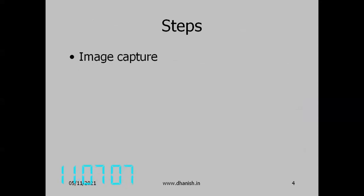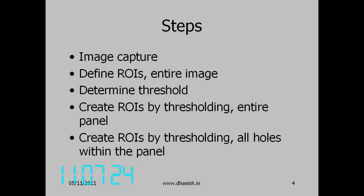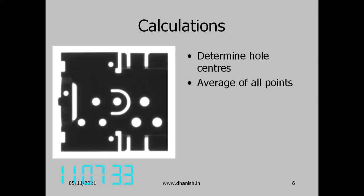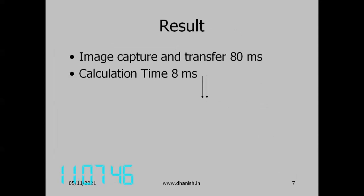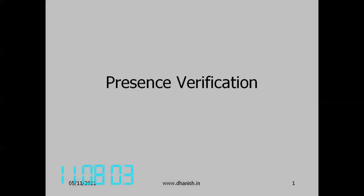The center distance between holes needs to be measured. The first tool is producing a large number of parts, so you have to inspect a large number of parts. The steps are: image capture, define region of interest over the entire image, determine threshold, create region of interest, determine the distance between two regions, determine the hole center by averaging all points, and determine the center distance. Time was 80 milliseconds plus batch time, and 80 milliseconds calculation time. Computers have become much faster now — this was several years back.